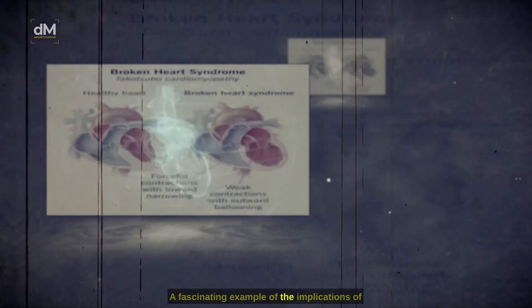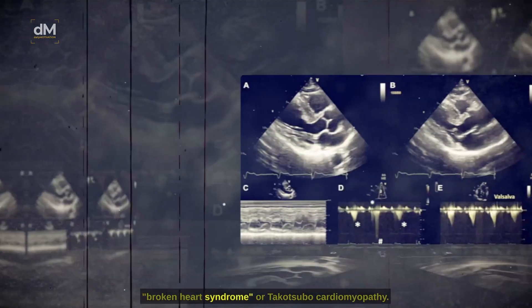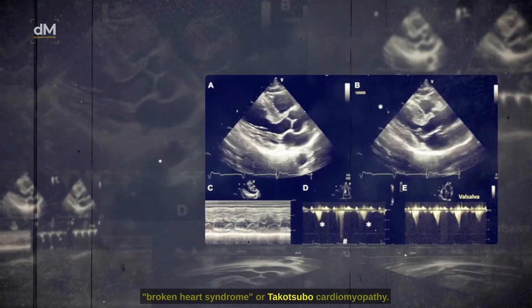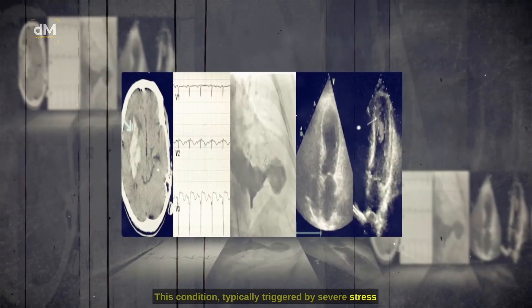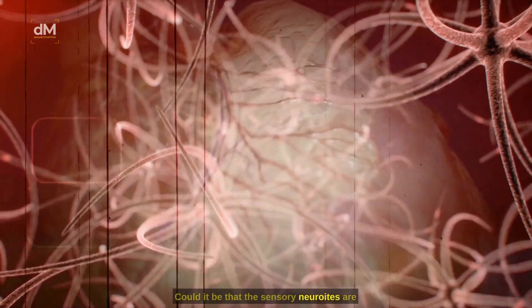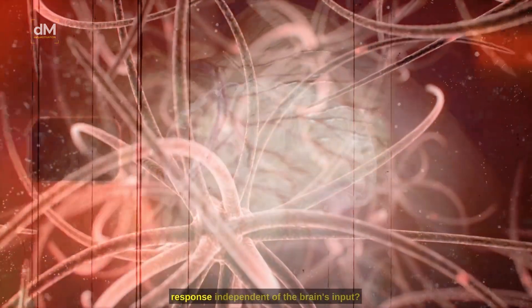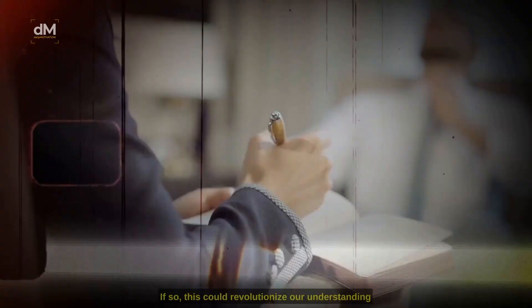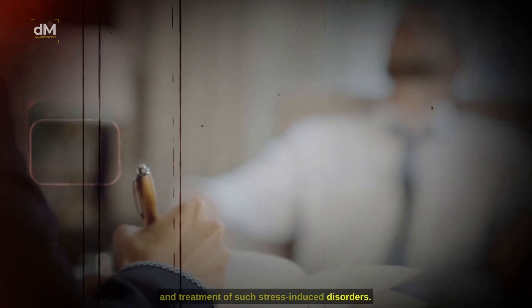A fascinating example of the implications of this discovery is its potential relationship to broken heart syndrome, or Takotsubo cardiomyopathy. This condition, typically triggered by severe stress or loss, causes heart muscle weakening, resembling a heart attack, but without any apparent blockage of the coronary arteries. Could it be that the sensory neuroites are responding to the emotional trauma, creating a physiological response independent of the brain's input? If so, this could revolutionize our understanding and treatment of such stress-induced disorders.